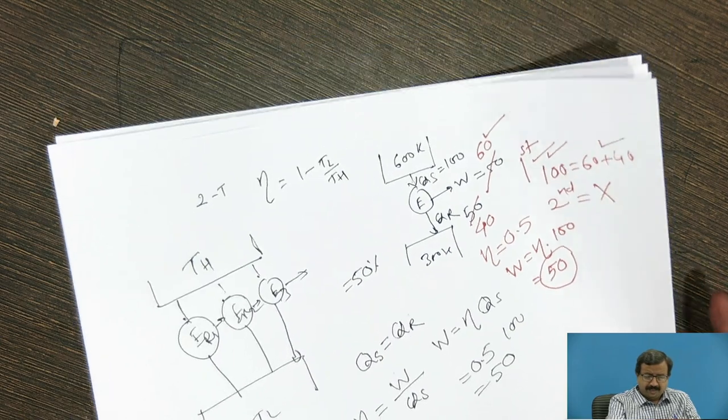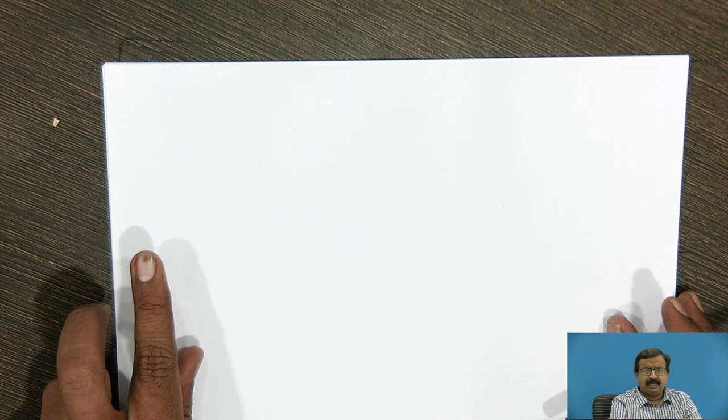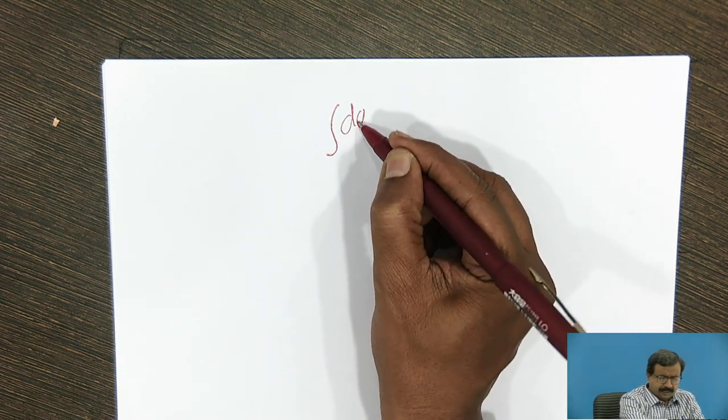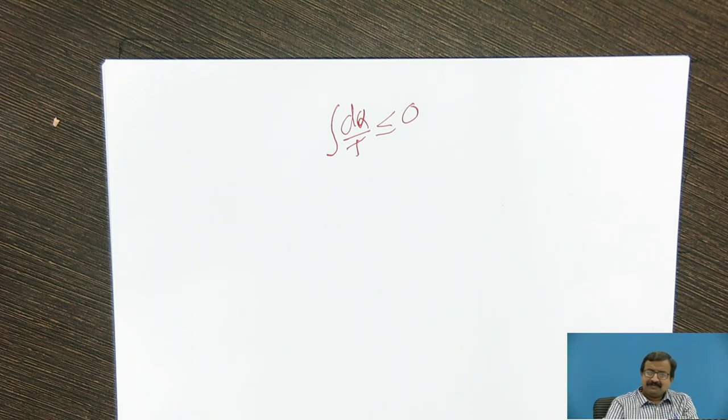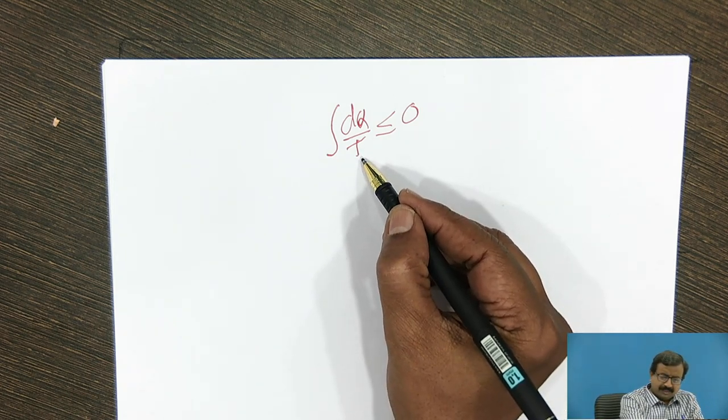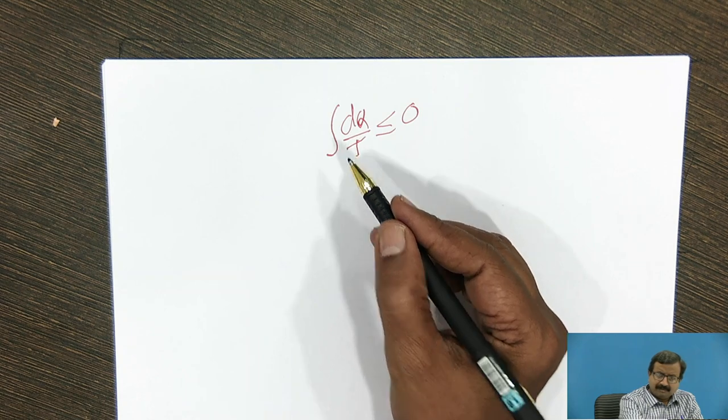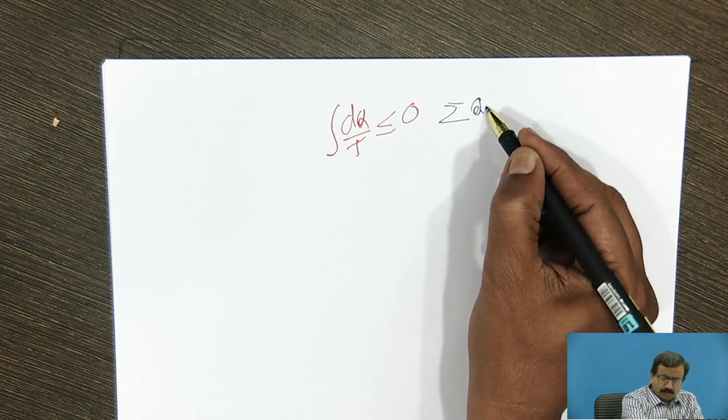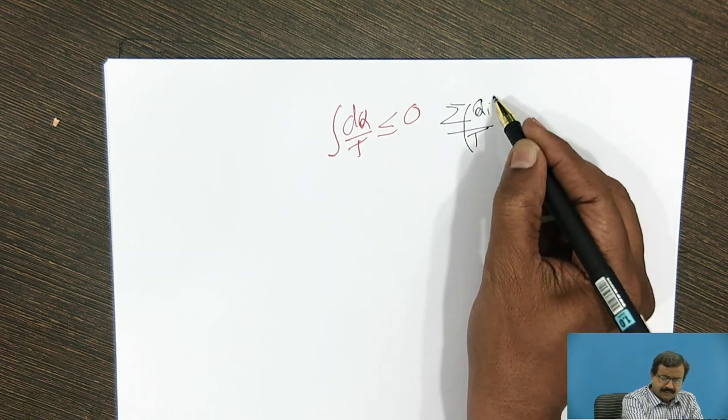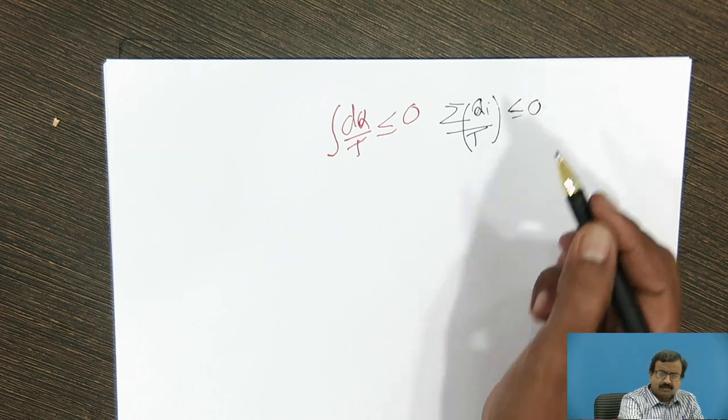But now today, we are going to discuss this as a part of using the Clausius inequality. Now Clausius inequality, you remember, is given by a simple definition that is integral dQ by T is less than or equal to 0. Now when I say dQ by T less than or equal to 0, there is no restriction of this particular process. There may be one process, two process, three processes, where it is equivalent to Qi by T. Summation of Qi by T is less than or equal to 0.